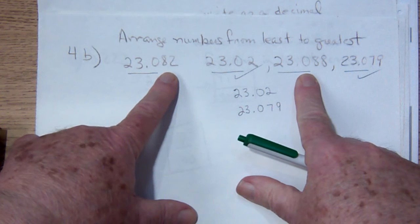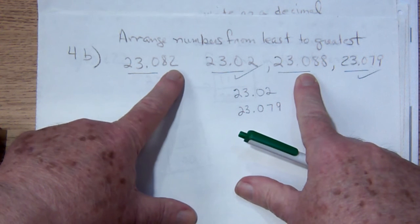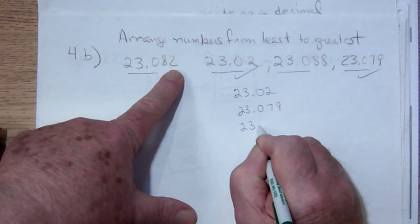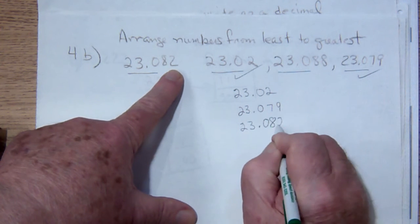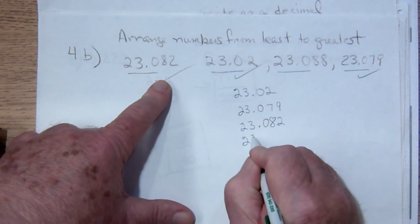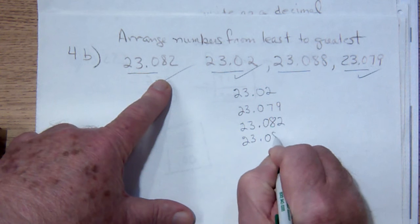Now these two are tied, they both have an 8, but that number is smaller because it has a 2 in the next place. So this is going to be 23.082, and that takes care of that one, and then we have left 23.088.